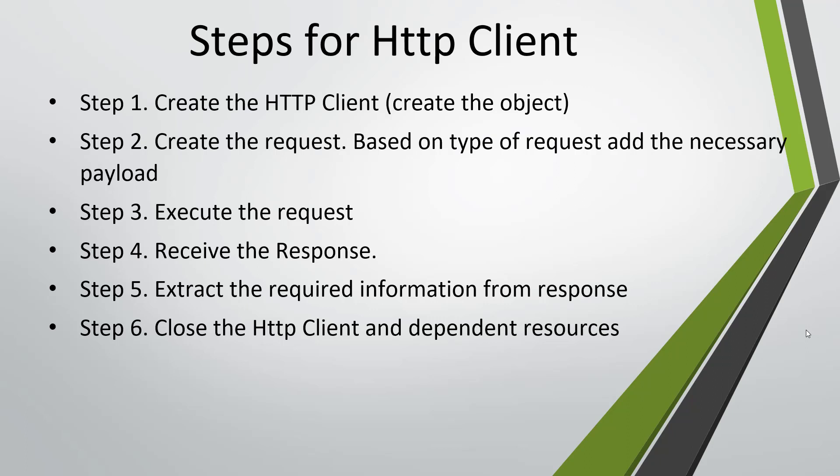Step 5: extract the required information from the response — that is, extract the content as well as the status code from the response. Step 6: close the HTTP client and all dependent resources. These are the steps we are going to follow in order to interact with the REST API of the application.